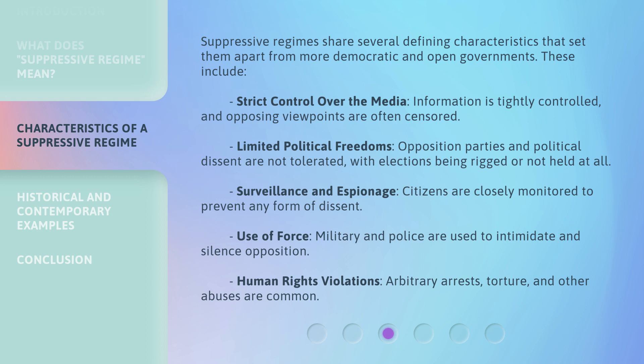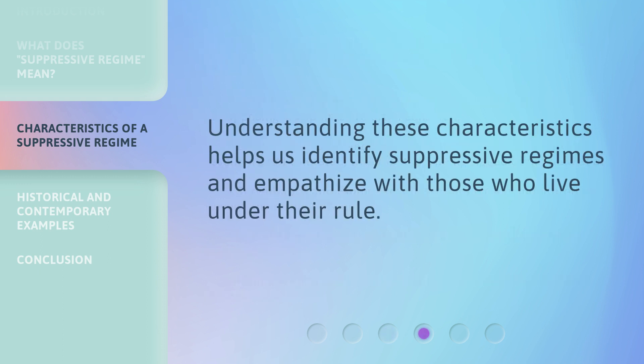Opposition parties and political dissent are not tolerated, with elections being rigged or not held at all. Surveillance and espionage mean citizens are closely monitored to prevent any form of dissent. The use of force sees military and police used to intimidate and silence opposition. Human rights violations, including arbitrary arrests, torture, and other abuses, are common. Understanding these characteristics helps us identify suppressive regimes and empathize with those who live under their rule.